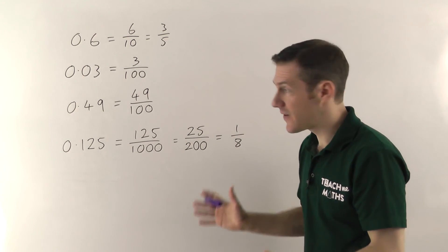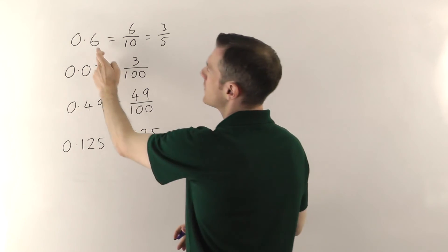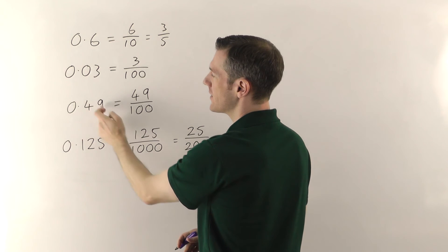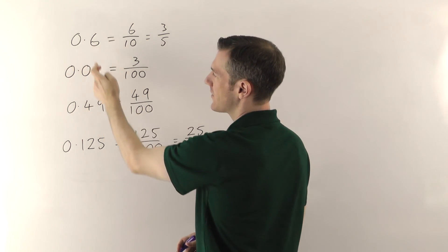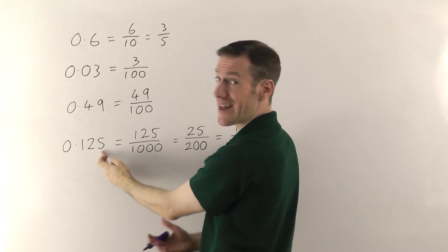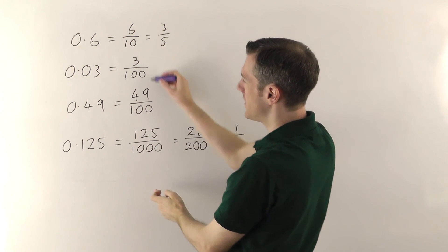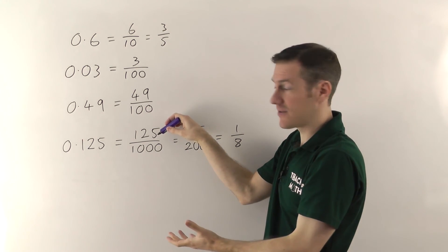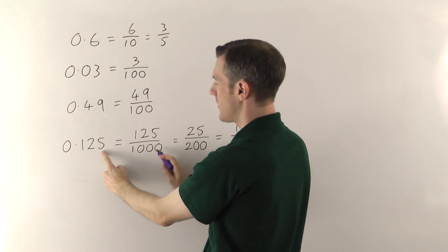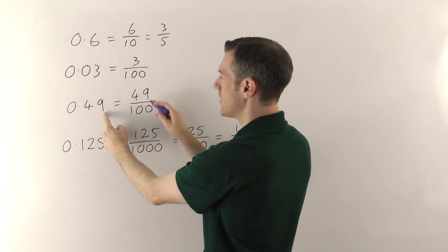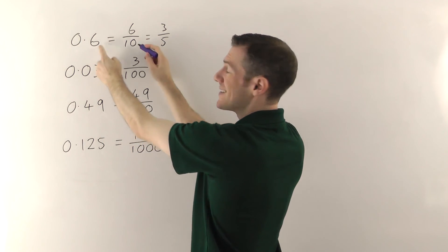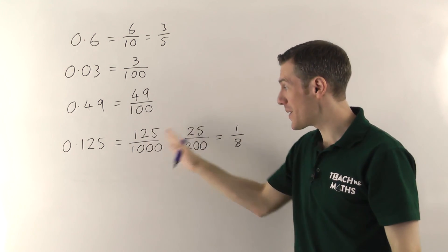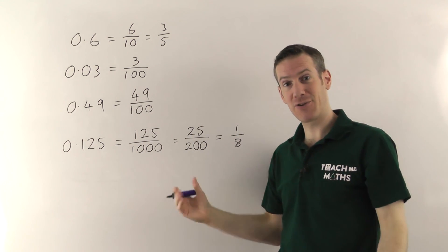Alright, so the basic method is very straightforward. You find the column furthest to the right that you've got. So here it's tenths, hundredths, hundredths. This one's thousandths. And then you write the number as a fraction over that amount. So here is 125 thousandths. Here it's 49 hundredths. Here it's 6 tenths. Then just remember to cancel down the fractions. And you've got your answer.